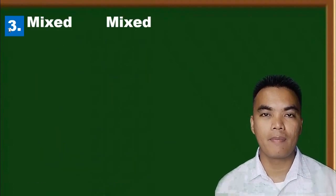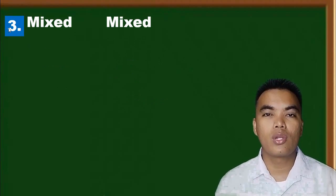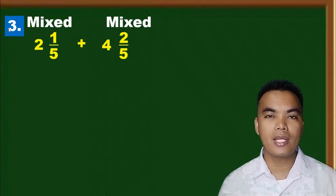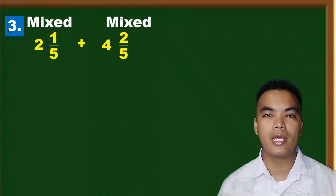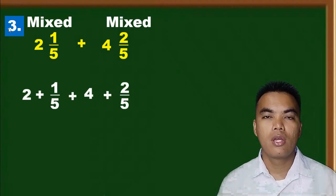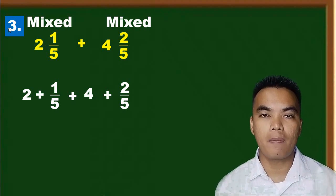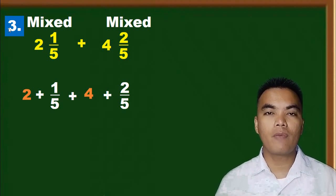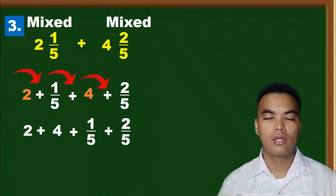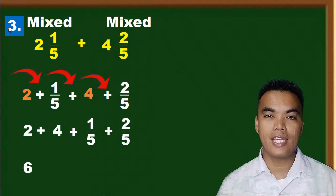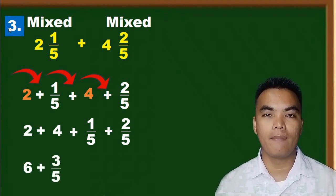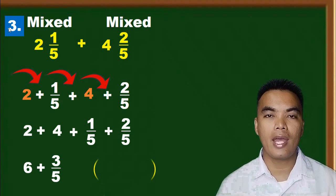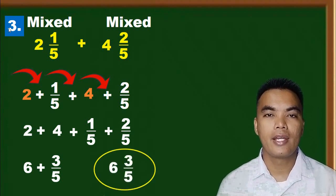How do we add a mixed number plus a mixed number? For example, two and one over five plus four and two over five. Using the commutative property, we add the whole numbers separately from the fractions: two plus four equals six, and one over five plus two over five equals three over five, since they are similar fractions. So our final answer is six and three over five.